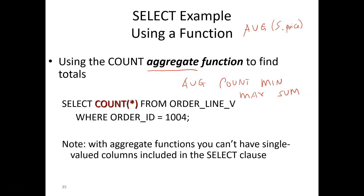The same applies to other functions. If you want to count the number of customers, you can do COUNT(customer_id), because every customer has a different customer ID. Another way to handle this is COUNT(*), which simply counts the number of records — that's another way to deal with it.